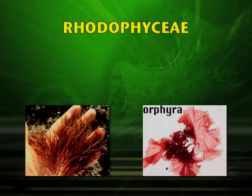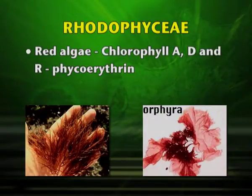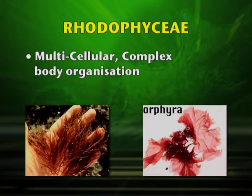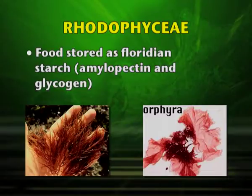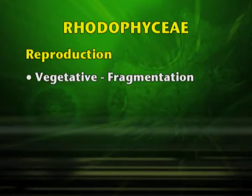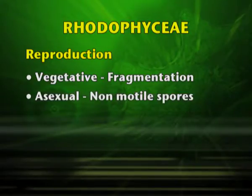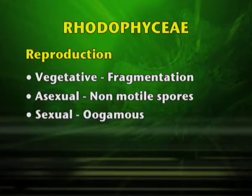Rhodophyceae — they are generally known as red algae and they contain the pigment chlorophyll A, D, and R-phycoerythrin. The cell wall is made up of cellulose. They are multicellular and have complex body organization. The food stored is in the form of floridian starch. Vegetative reproduction is by fragmentation; asexual reproduction is by non-motile spores; and sexual reproduction is oogamous.